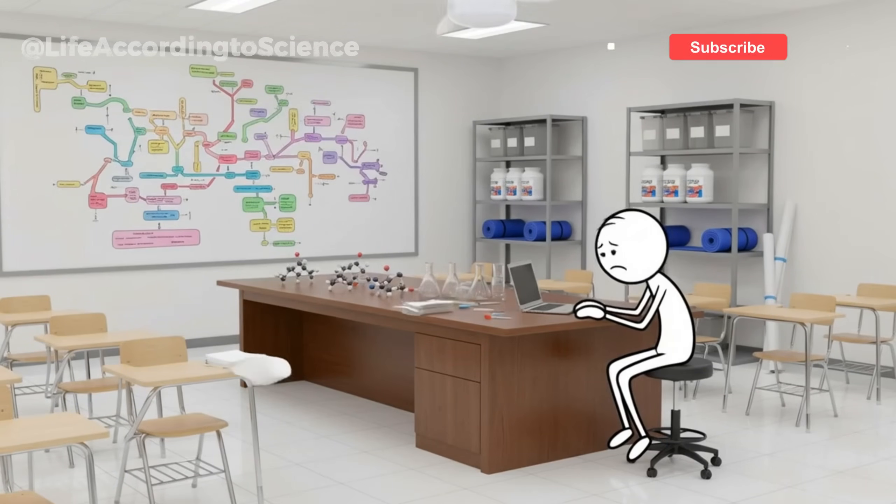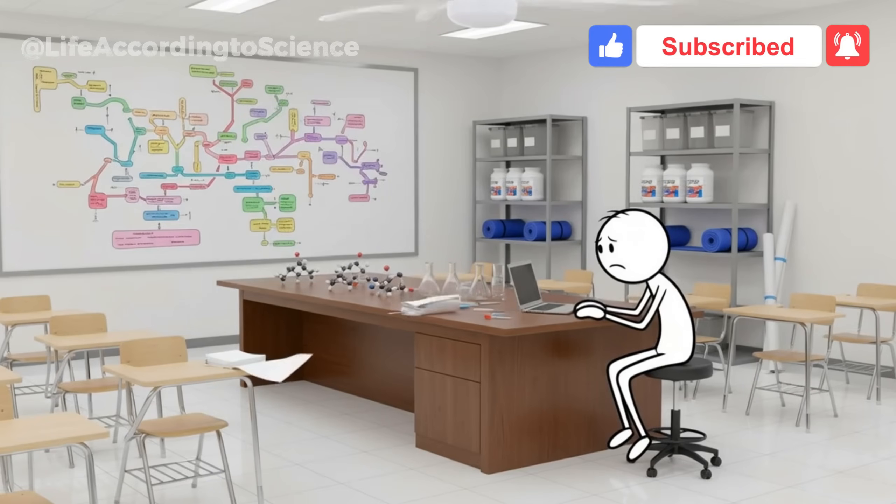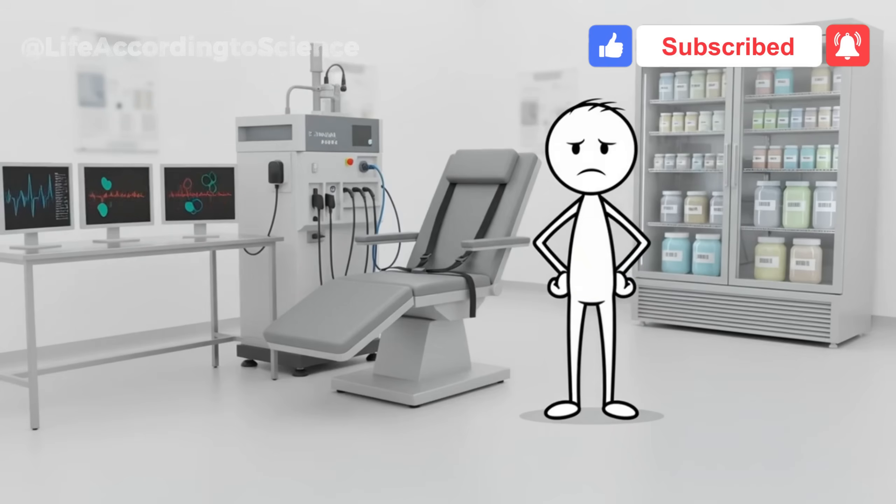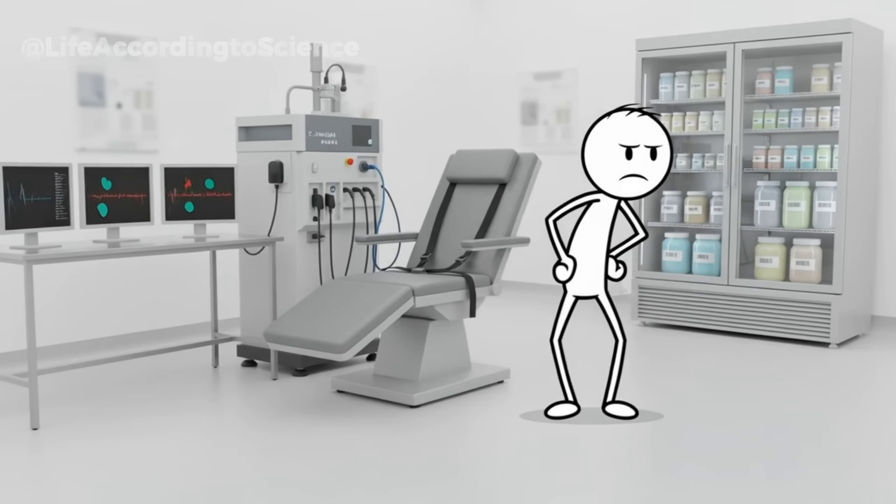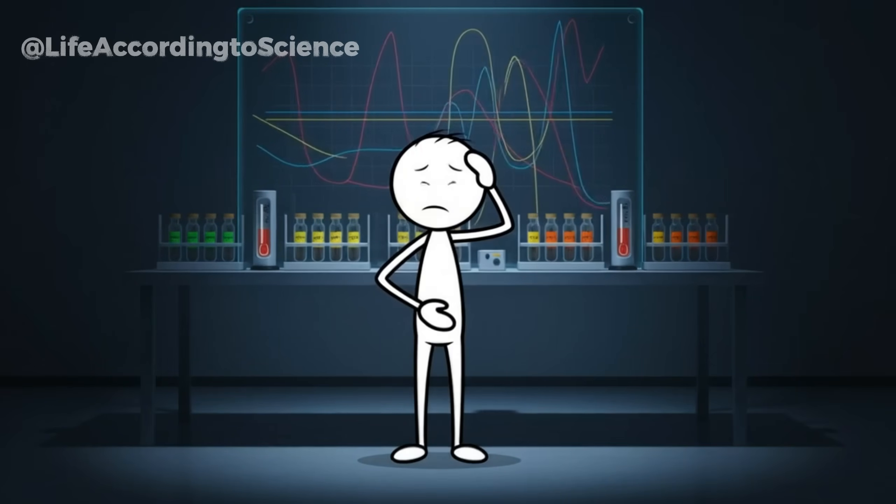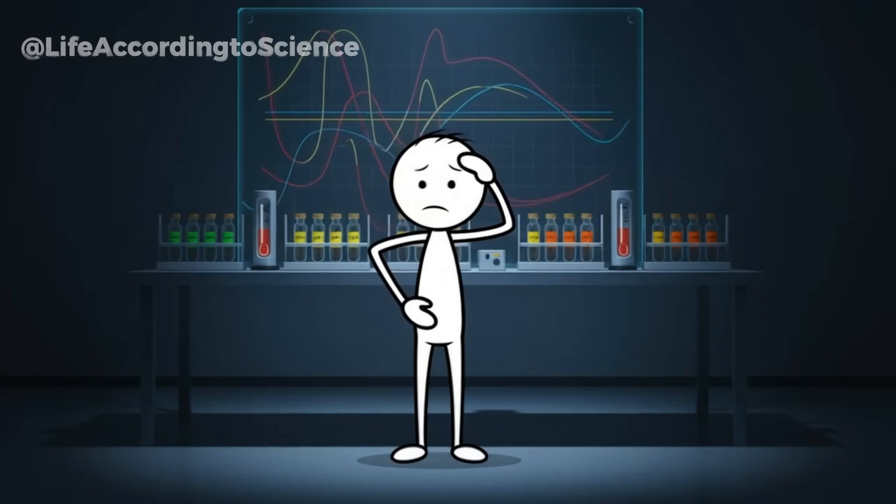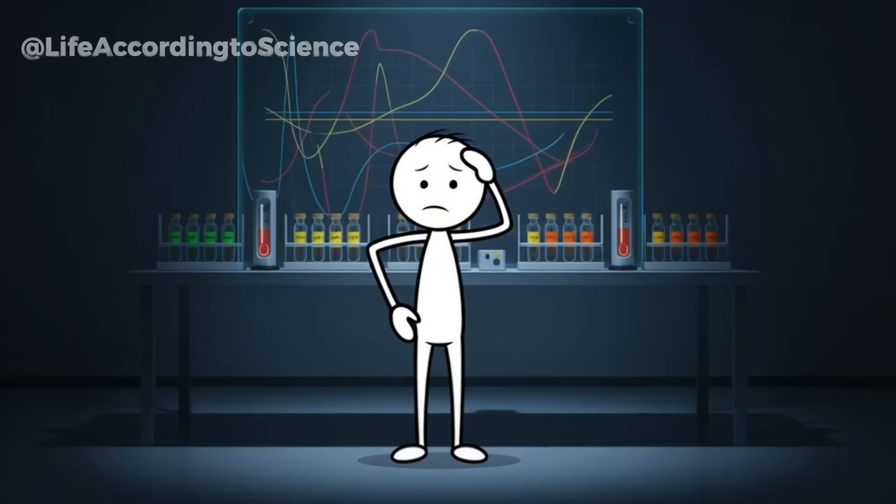When you diet aggressively or push yourself too hard, your brain reads those actions as signs of danger, triggering a biological defense mechanism. That's when everything slows down. Your metabolism drops. Hunger hormones like ghrelin surge and fat-burning hormones like leptin fall. Your body begins to fight back, trying to save every ounce of energy it can.